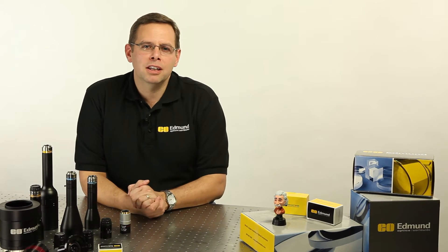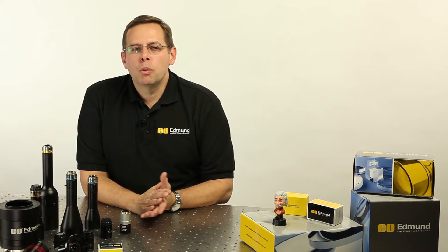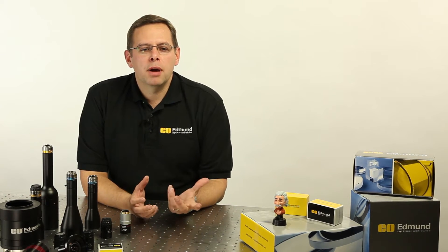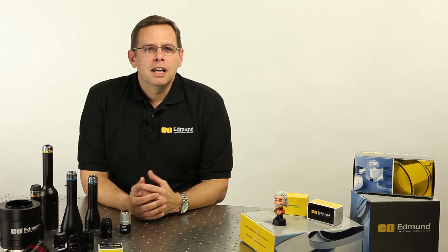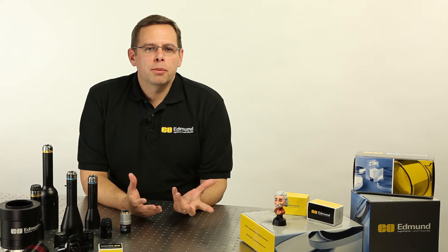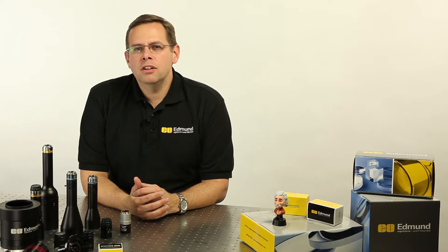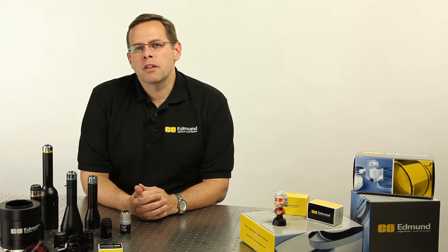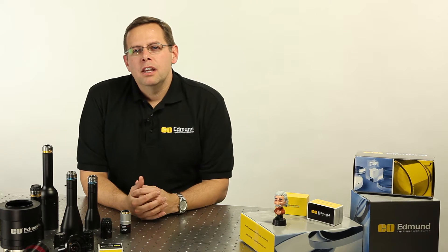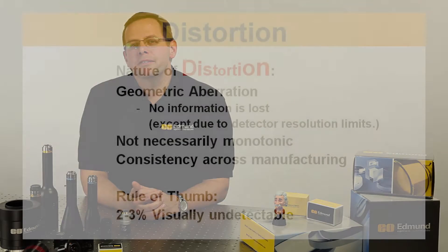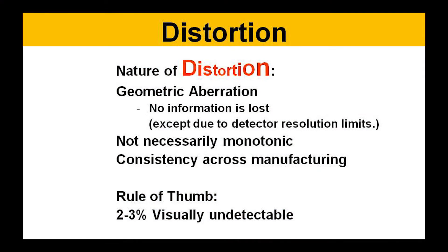We'll get back to keystoning in a few minutes. When we look at barrel or pincushion distortions, that's actually a change in magnification over the field. The first thing to keep in mind is that distortion is what we call a geometric aberration. The important part of that is that information isn't actually lost — it is simply misplaced.